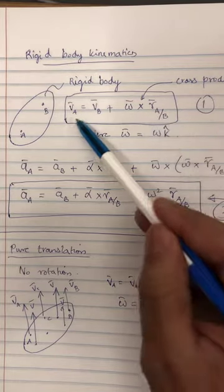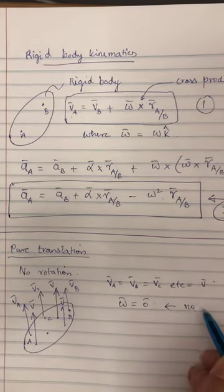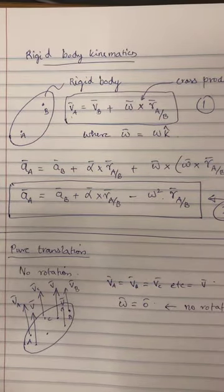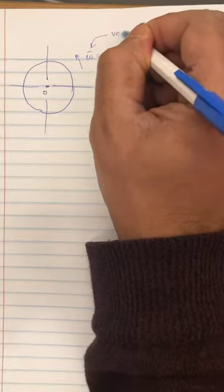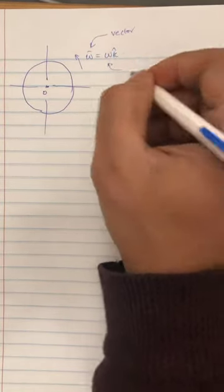If omega equals zero in the velocity equation, then V_A equals V_B. So this means no rotation — that's pure translation. Now let's consider pure rotation. Imagine a disk with omega equals omega K, where omega with the vector bar is a vector and omega without it is a scalar. We should be comfortable with this notation.